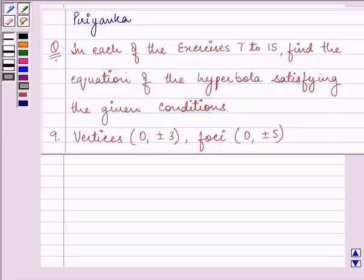Hello and how are you all today? The question says: in each of the exercises 7 to 15, find the equation of the hyperbola satisfying the given conditions. The vertices are given as (0, ±3) and the foci are given as (0, ±5).